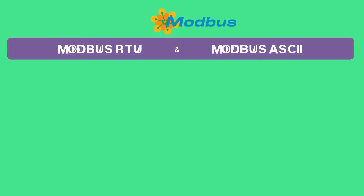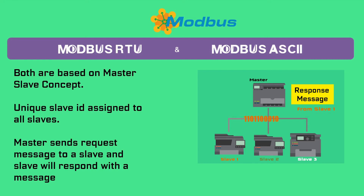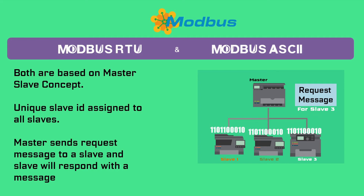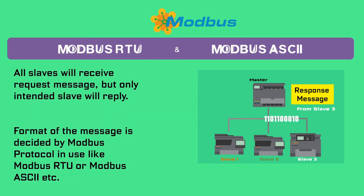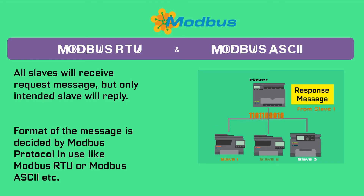In this session, we will concentrate on Modbus RTU (Remote Terminal Unit) and Modbus ASCII only. Both are based on the master-slave concept. In both, a unique slave ID is assigned to all connected devices except the master. The master sends a message to the desired slave with its slave ID, to which that slave node responds. All other slaves also receive the message, but only the slave whose ID matches the received message will respond. The format of the message is decided by the Modbus protocol.